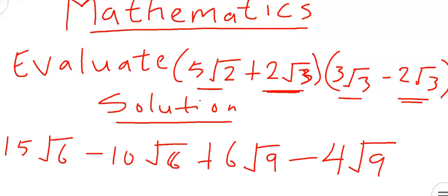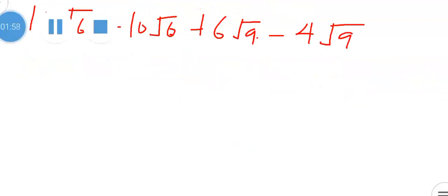Then after that we will be simplifying it. We can see that we have √6 here and we have √6 here. They are in the same form, so we can subtract. 15 minus 10, that will give us 5√6.